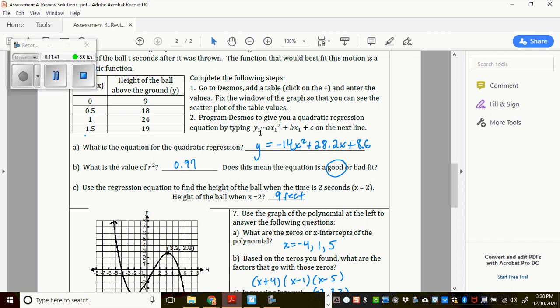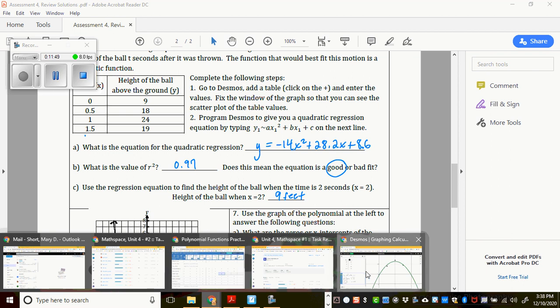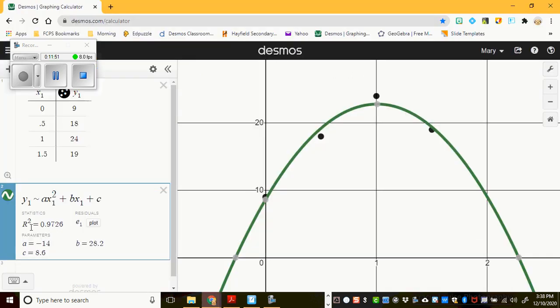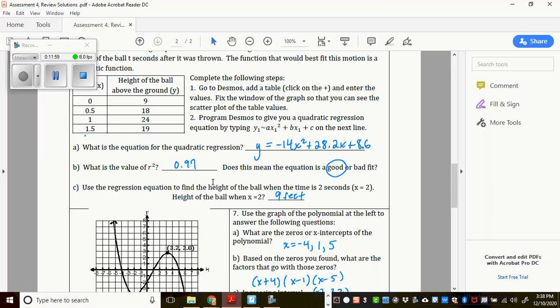Alright. So you're going to write that as a parabola equation. And then the next question asks you, what's the value of r squared? Well, r squared is right there on Desmos as well. So r squared is right here. You see it? Okay. 0.9726. That's very good. Remember, close to 1. Alright. So 0.97.